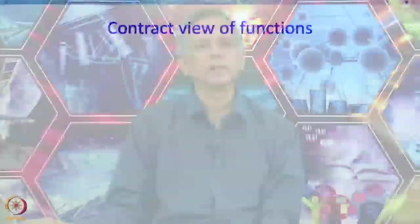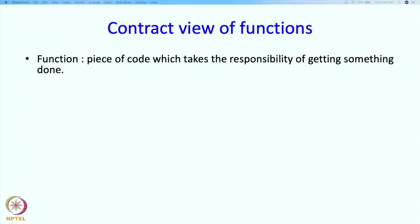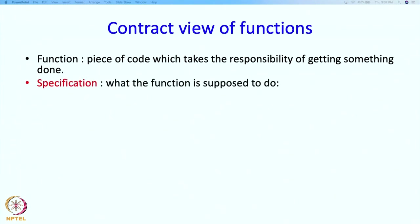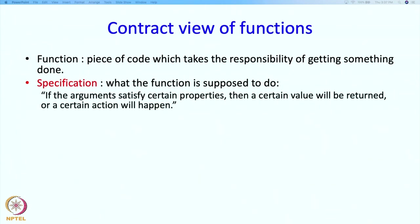At this point you have seen several examples of functions, and now I want to say something about how you should think about functions. A function is a piece of code which takes the responsibility of getting something done. The specification is a description of what the function is supposed to do — if the arguments satisfy certain properties, then a certain value will be returned or a certain action will happen.